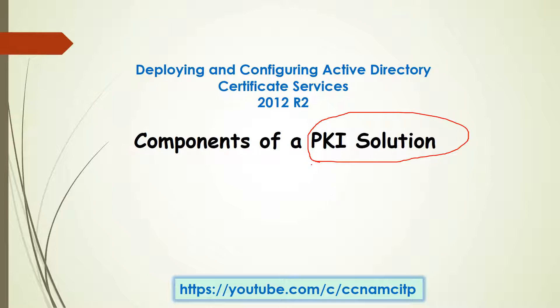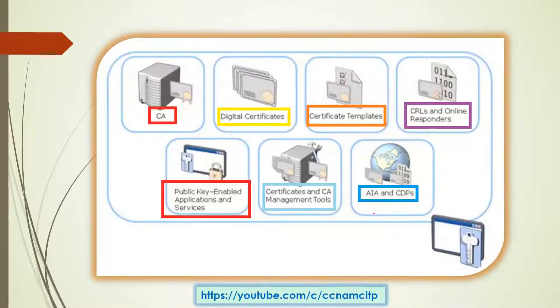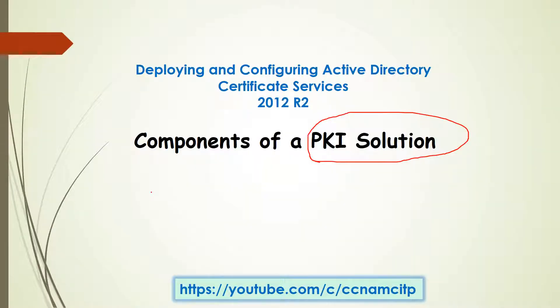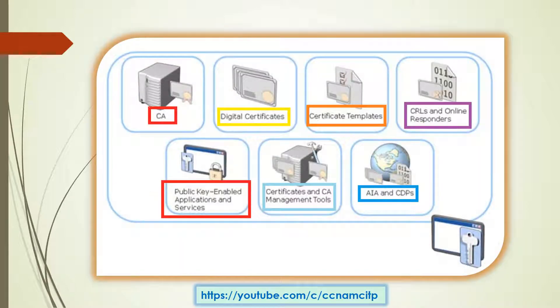Before that, I will tell you I have uploaded one video in the same series which covers basic information about what is PKI — public key infrastructure — and what components are required for that. So this is a complete PKI solution infrastructure. You can see these are the main components of PKI: we require a CA (certificate authority), digital certificates, certificate templates — all these things we need to configure, then only there will be a successful PKI.